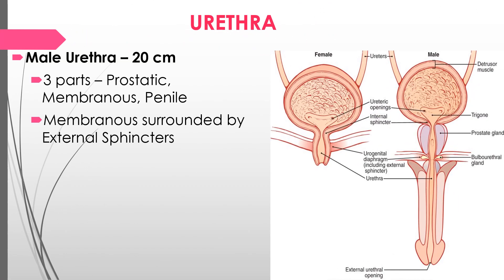The urethra differs between male and female. The male urethra is the longest and has three parts: the prostatic part, the membranous part, and the penile part. The membranous part is surrounded by the external sphincter, and the internal sphincter is also visible in this region.